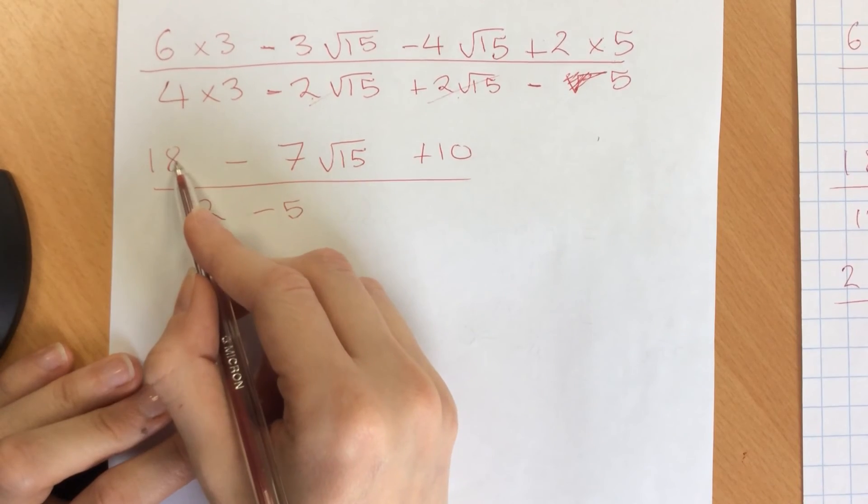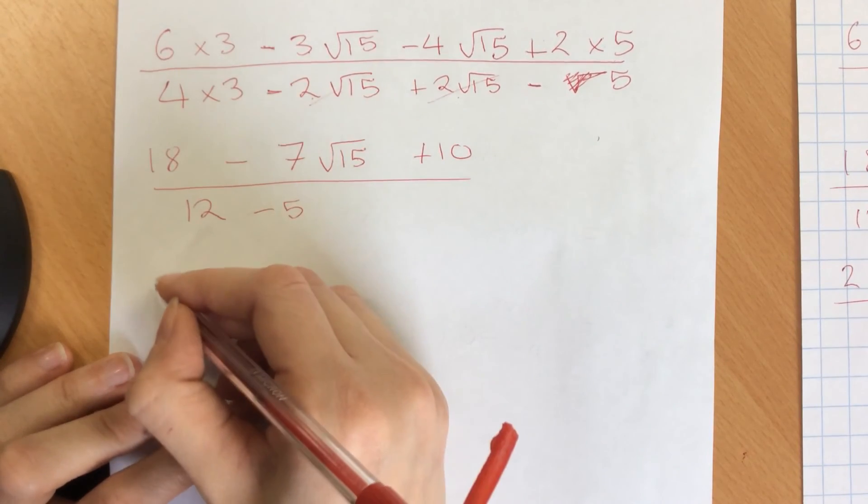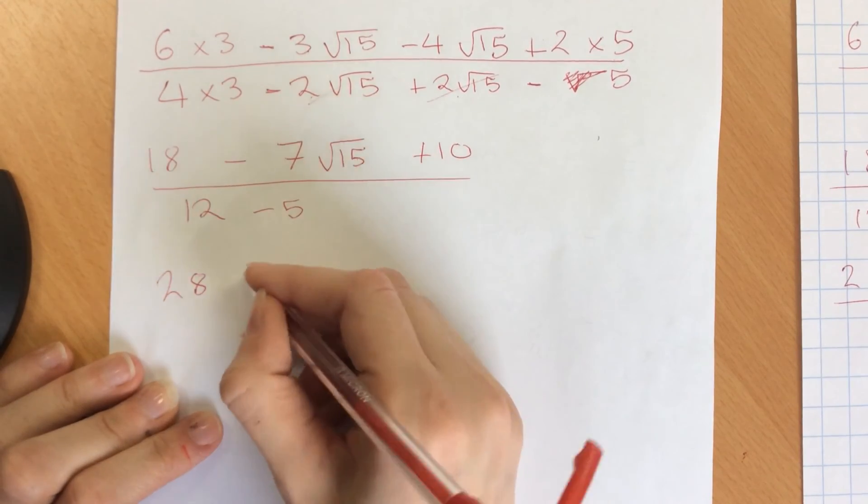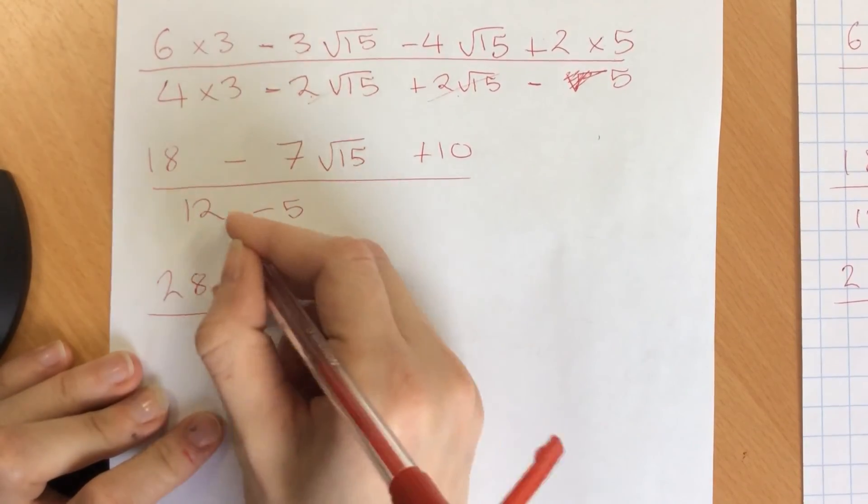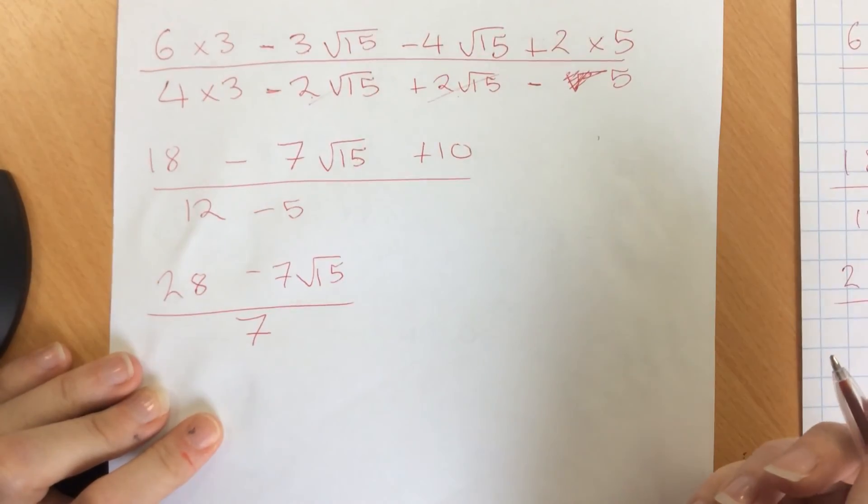So we end up with 18 plus 10 gives me 28 minus 7 root 15. All over 12 take away 5 is 7.